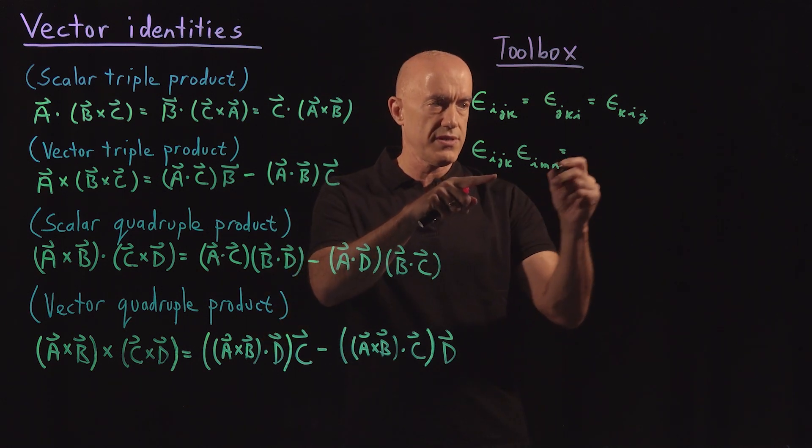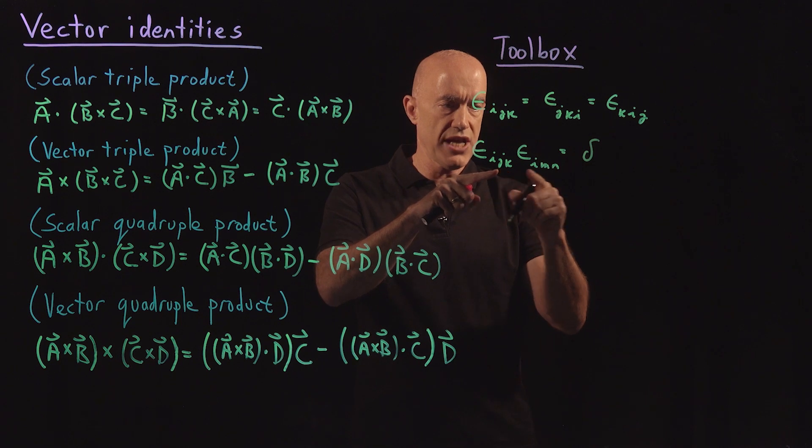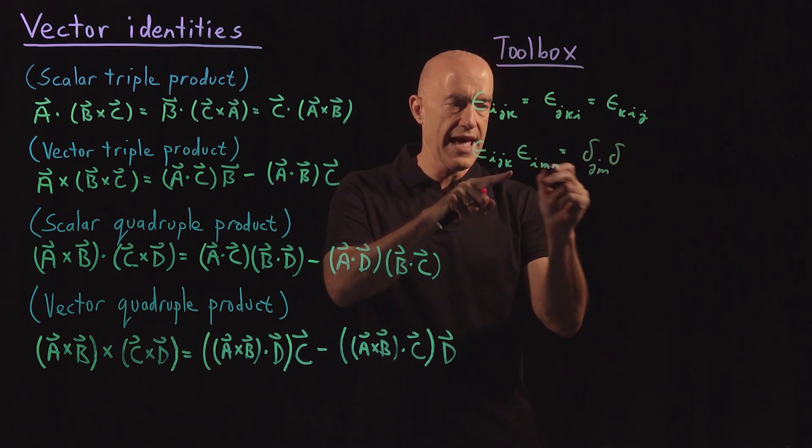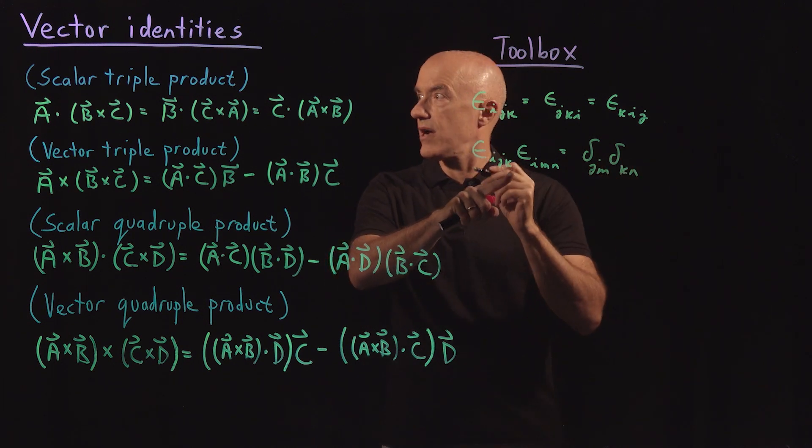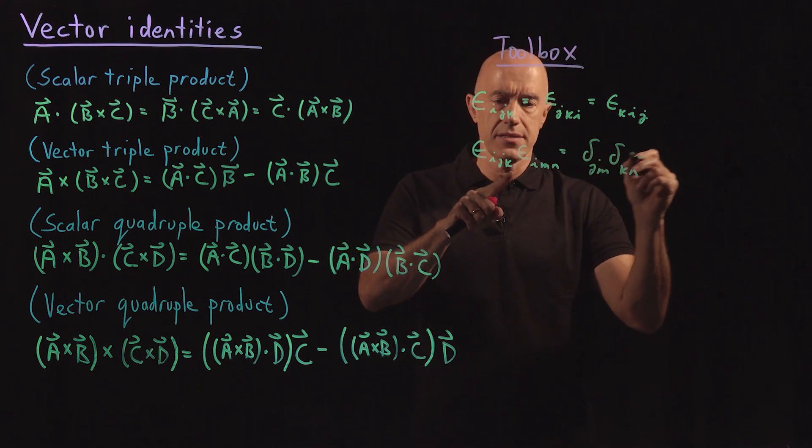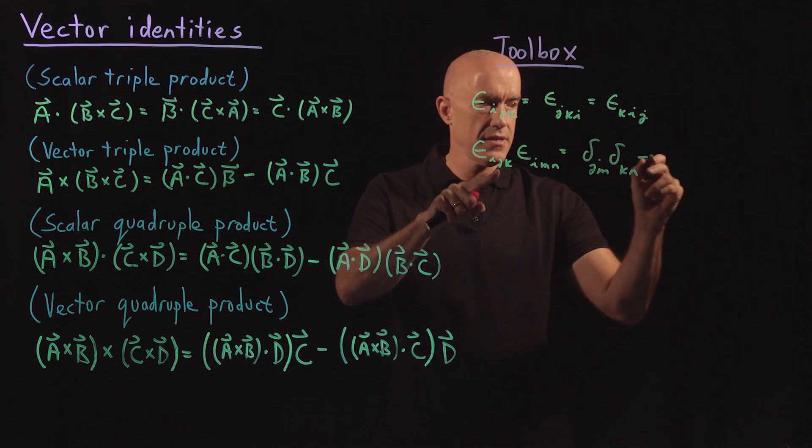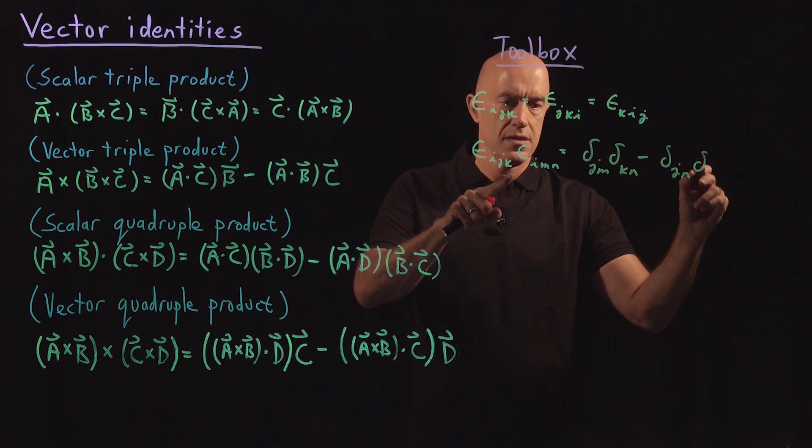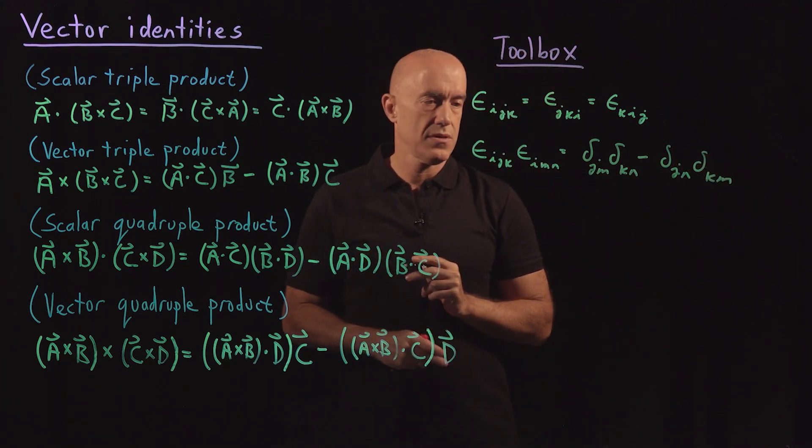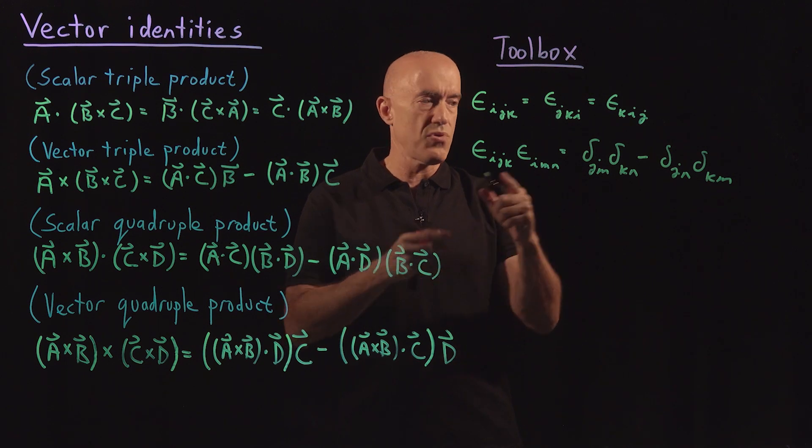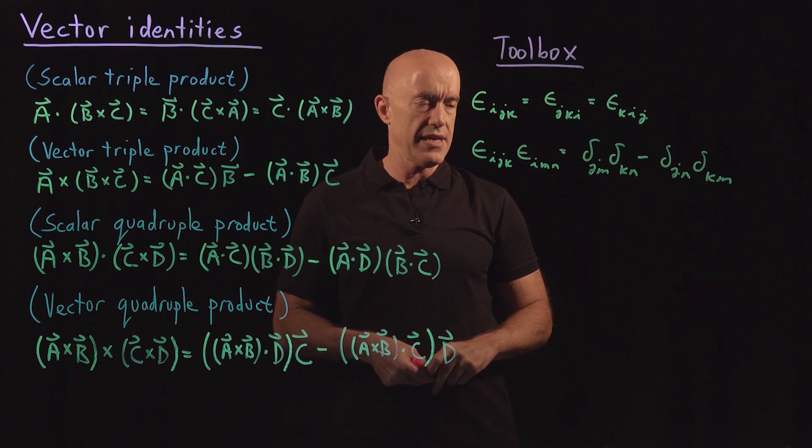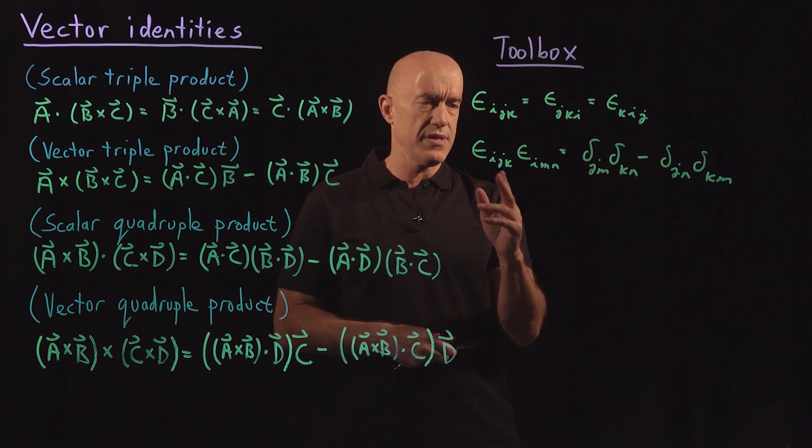This reduces to products of Kronecker deltas. So as a problem, you're supposed to prove this. This is equal to delta_jm delta_kn minus delta_jn delta_km. This is a very important identity that we'll use in the proof of these vector identities. So how do you remember this? So we're only contracting the first index.